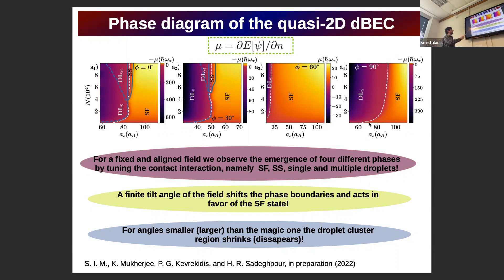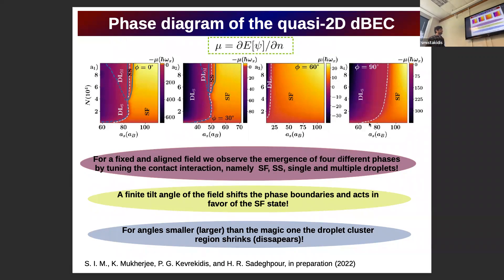As we increase the tilt angle but remain below the magic angle, the supersolid region and the multiple droplet region start to shrink, because the dipole-dipole potential effectively decreases in magnitude. At the corresponding magic angle, the dipole-dipole potential will vanish, so we will have just a superfluid state throughout. Above the magic angle, only the single droplet region and the superfluid state appear in the system.